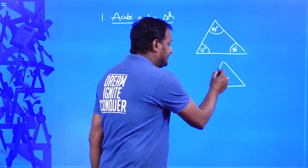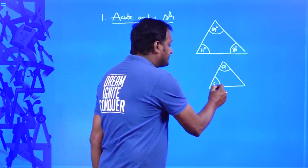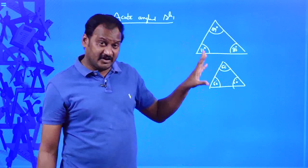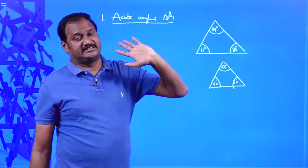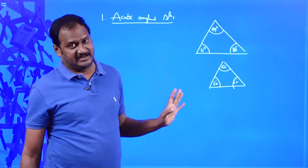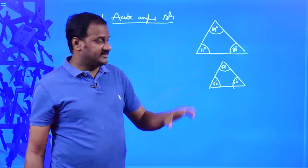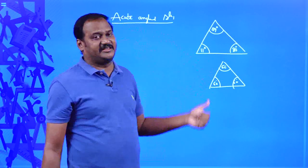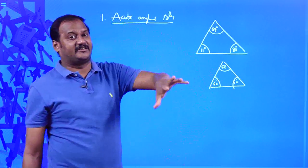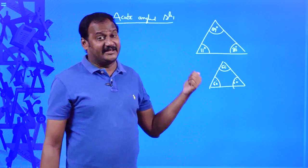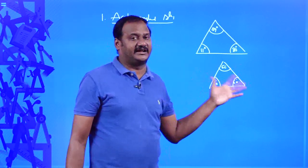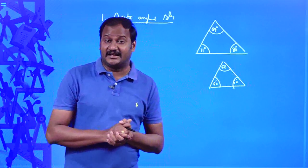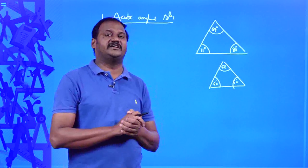Suppose my triangle has angles of 60 degrees, 60 degrees, and 60 degrees. This triangle is also an acute angled triangle because all three angles are acute. This is an equilateral triangle, and every equilateral triangle is acute — it is one of the best examples of an acute angled triangle. To repeat: acute angled triangle means if every single angle of a triangle is acute, then it is said to be an acute angled triangle.